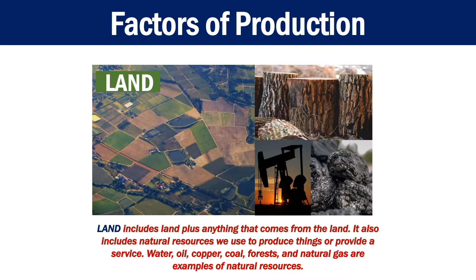Land includes land plus anything that comes from the land. It also includes natural resources we use to produce things or provide a service. Water, oil, copper, coal, forests and natural gas are examples of natural resources.